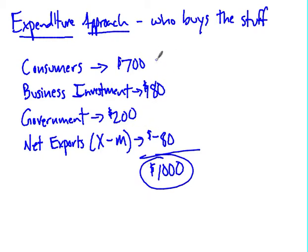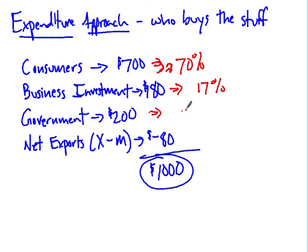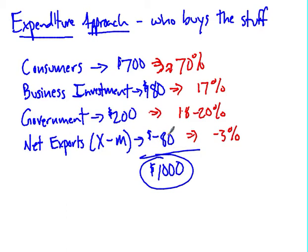Those numbers were chosen to reflect real-world proportions. Consumer spending is roughly 70% of GDP, business investment is roughly 17–18%, government spending is around 18–20%, and the US has run a trade deficit of around negative 3% of GDP for the last 10–20 years. So those percentages are broadly equivalent to what the numbers would look like today.